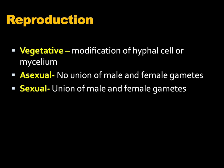Fungi reproduce either vegetatively, sexually, or asexually. In vegetative reproduction, modification of the hyphal cell or the mycelium occurs. In asexual reproduction, there is no union of male and female gametes. But in sexual reproduction, there is always a union of male and female gametes — that is, mating between the antheridium and the oogonium, which are the male and female gametes of fungi respectively.